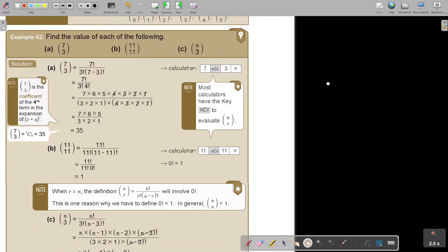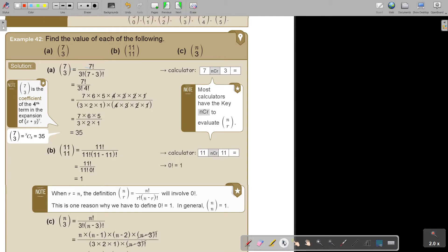I'm going to move it up. Find the value of each of the following: 7, 3. You can write it out 7 factorial, 3 factorial, 7 minus 3. You can write both out, and you can cancel, and you can get 35. Look at the short way.